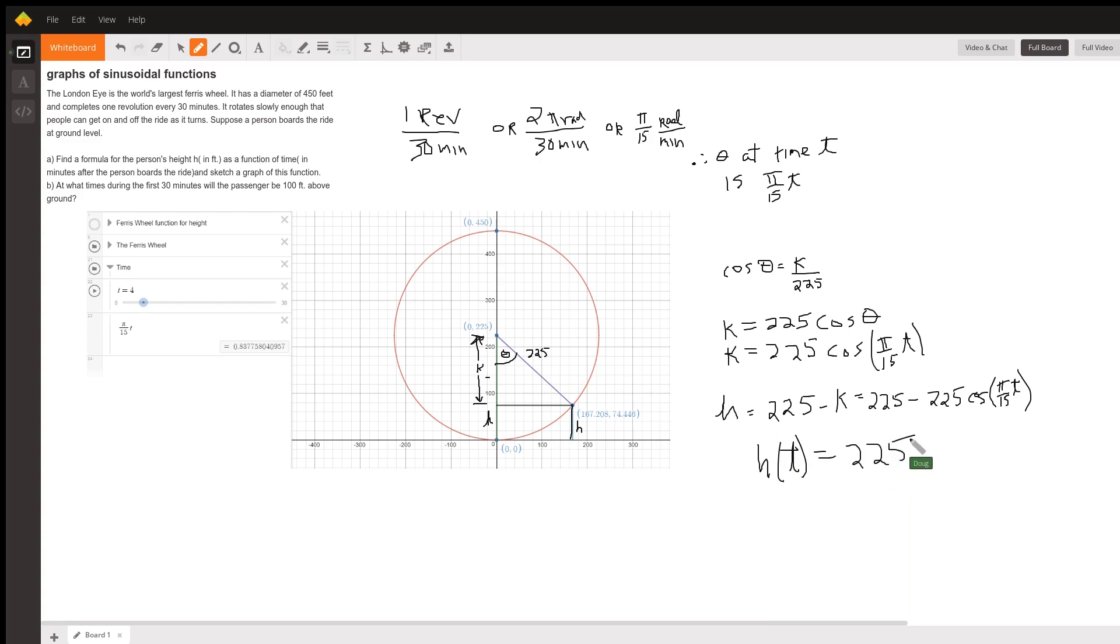You could factor out that 225 if you wanted to: 225 times (1 minus cosine of π/15t). And you might notice that the period will be 2π divided by π/15, which is 30 minutes.